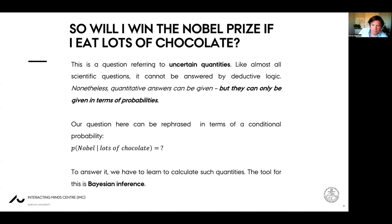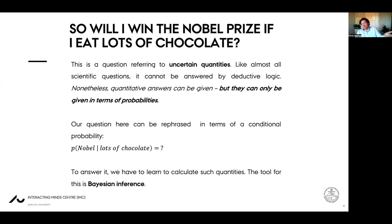Our question can be rephrased in terms of a conditional probability: what is the probability of winning a Nobel Prize given that I eat a certain amount of chocolate? If I plug in 100 grams a day, 200 grams a day, two kilos a day — how does that affect my probability of winning a Nobel Prize? To answer questions like this, where we reason with uncertain quantities, we have to learn to calculate with them. And the tool for that is Bayesian inference.